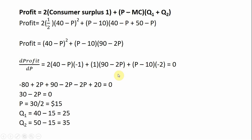This simplifies to 30 minus 2P, so the profit-maximizing price is $15. Each consumer will be charged $15 per unit. Plugging $15 into the demand for both consumers: consumer one will buy 25 units (40 minus 15), and consumer two will buy 35 units (50 minus 15).